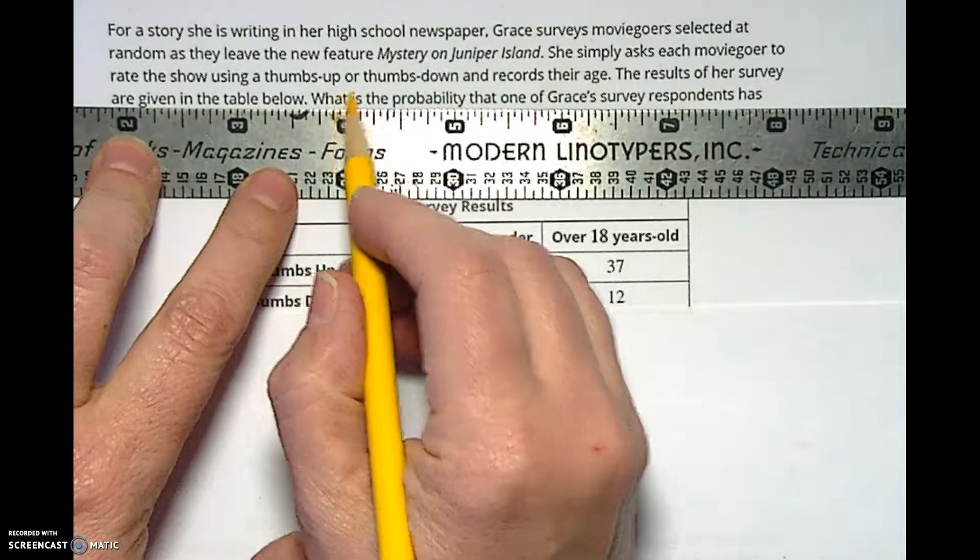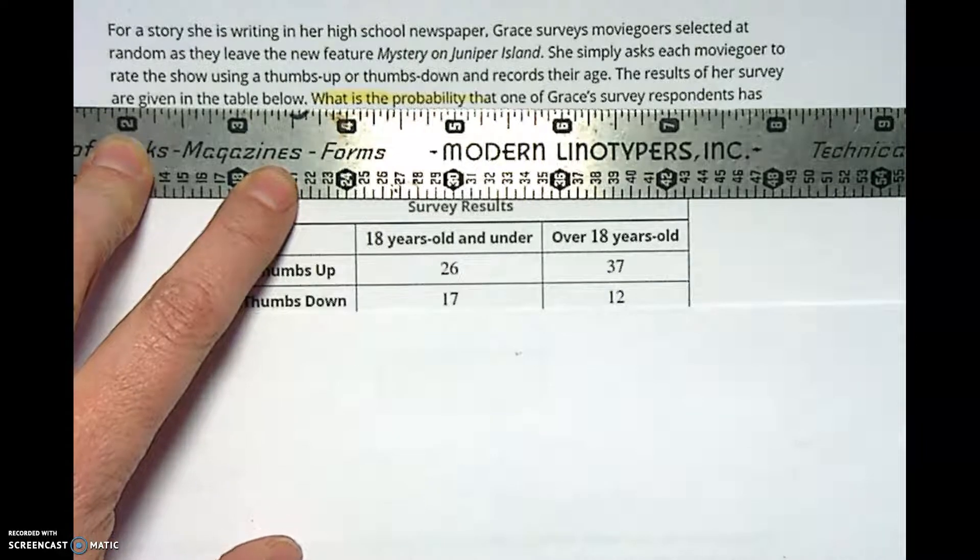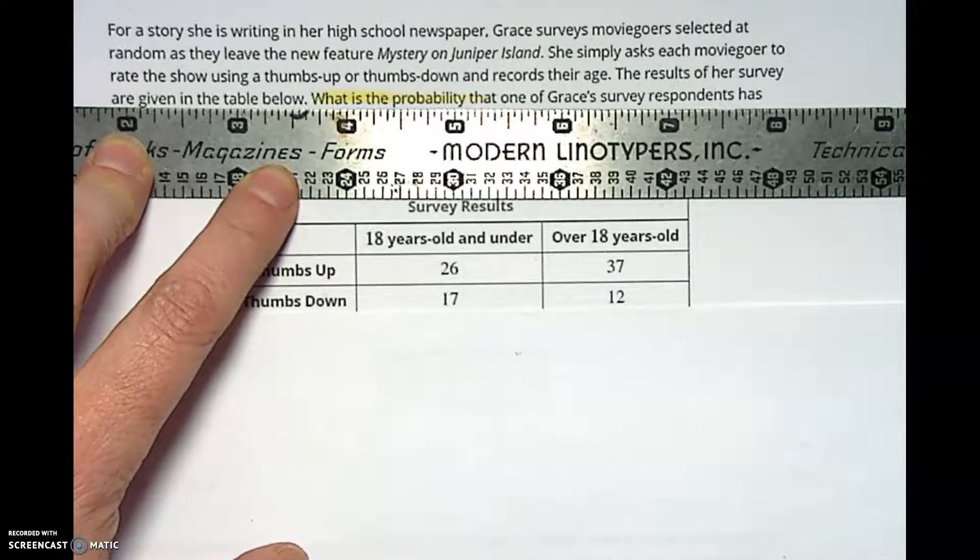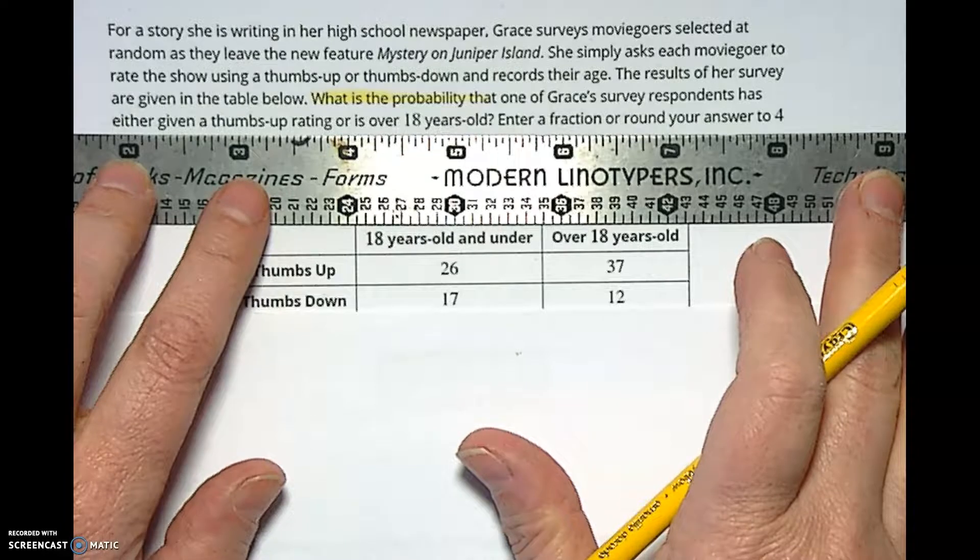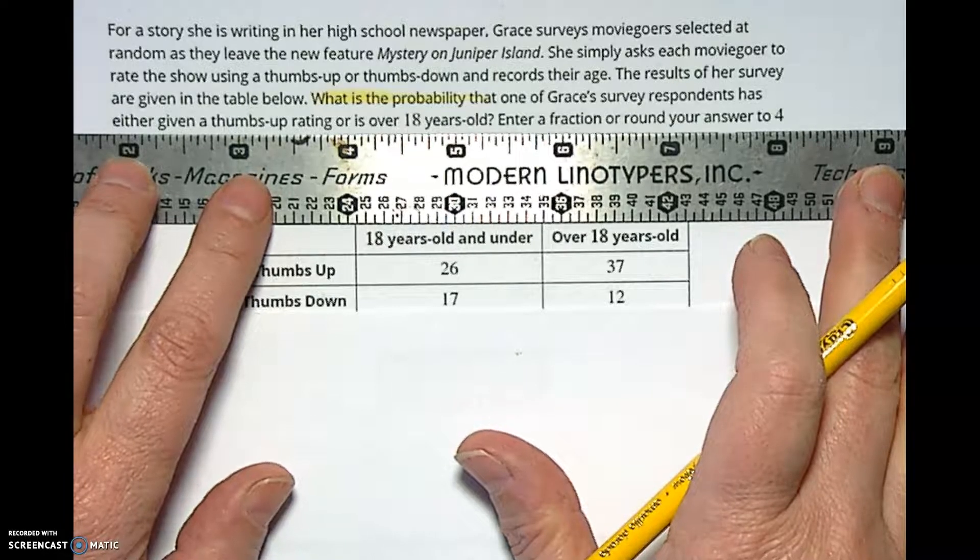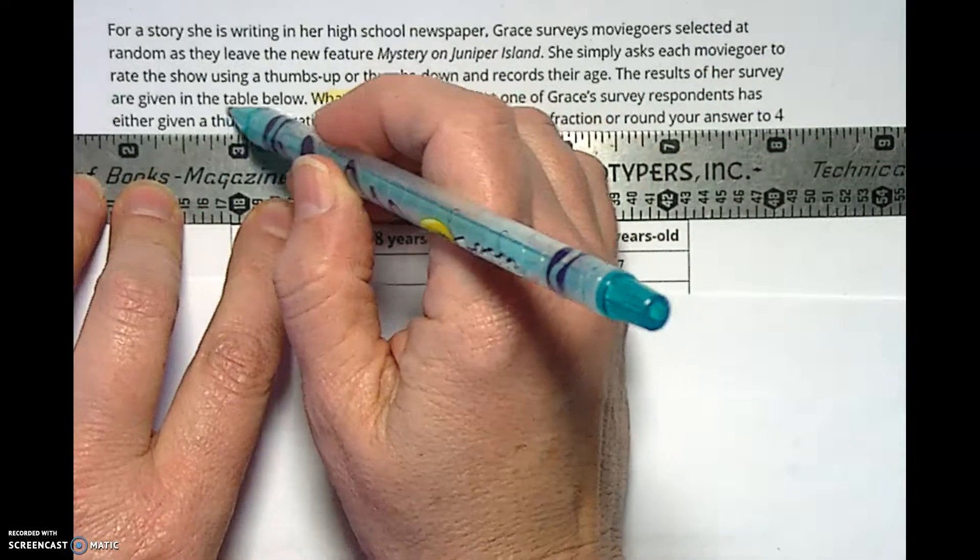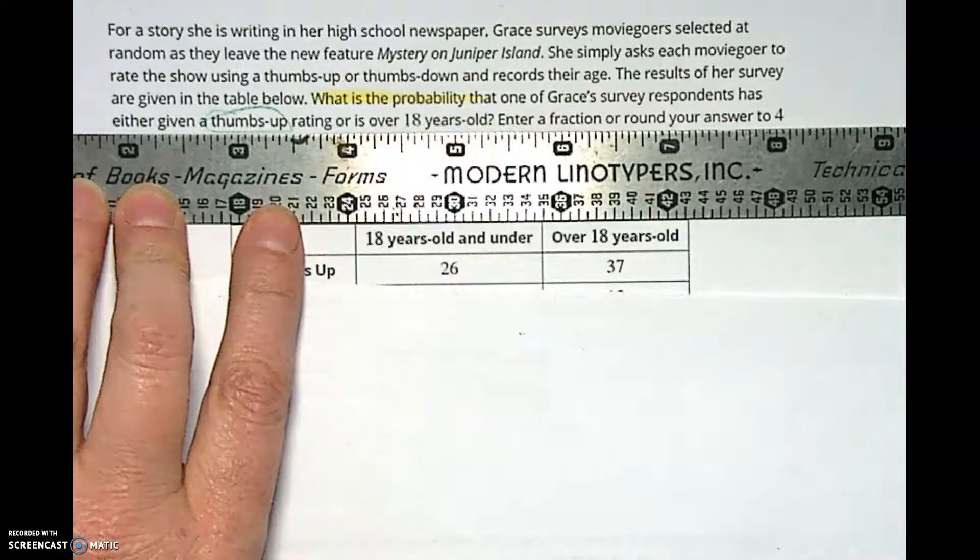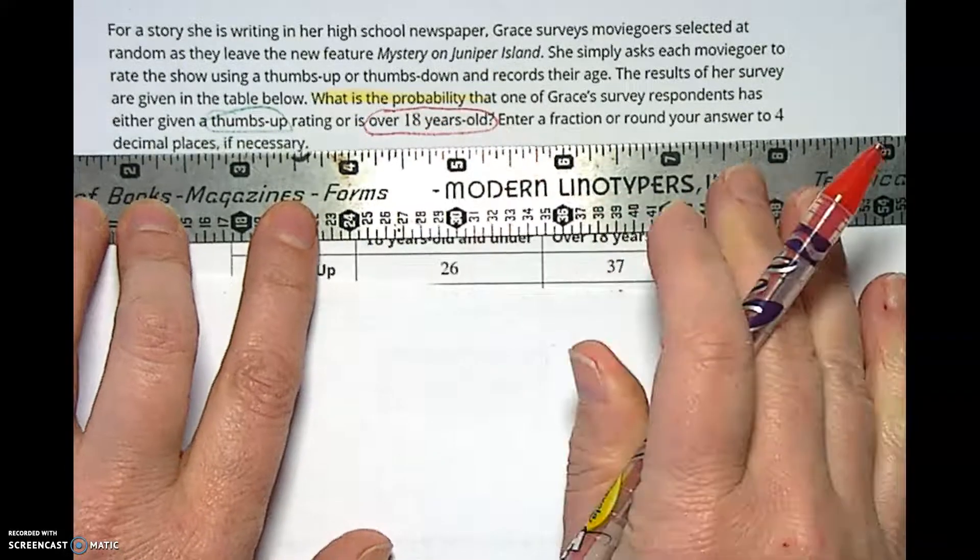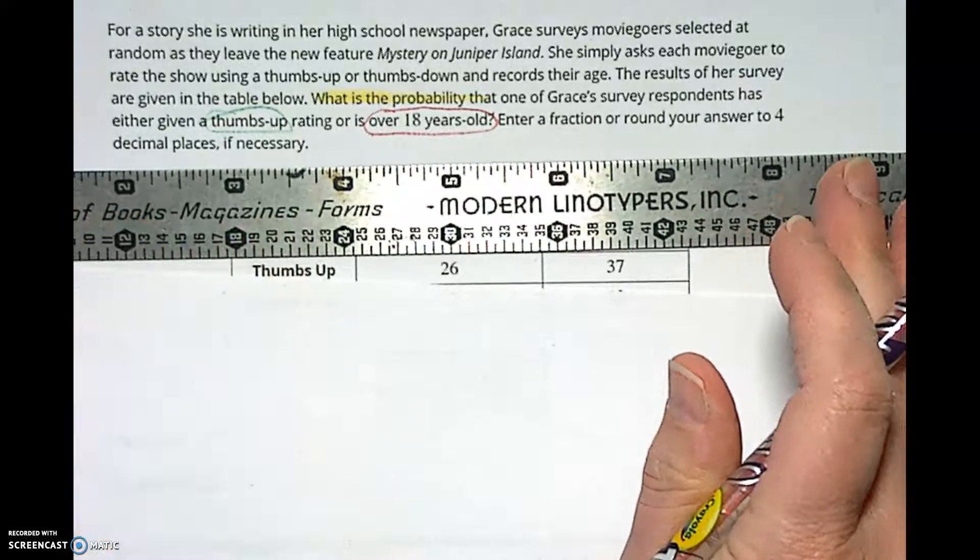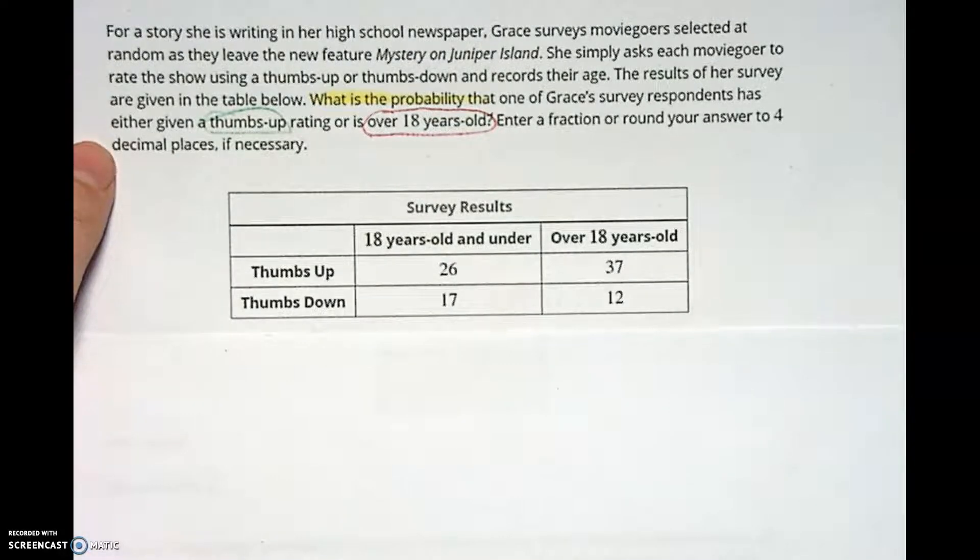What is the probability - so right away I'm like, what is the probability? That's got to be important. So it's a probability thing, which means we've got to have it in a fraction or a decimal number between zero and one, inclusively. That one of Grace's survey respondents has either given a thumbs up or is over 18 years old. Enter a fraction or round your answer to four decimal places if necessary.